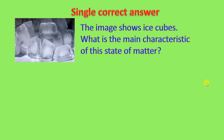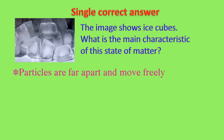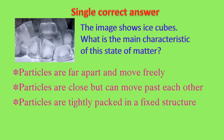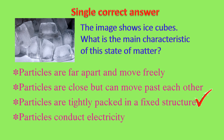Let us see the first question — a single correct answer question. Observe the image given. The image shows ice cubes. What is the main characteristic of this state of matter? These are ice cubes, meaning they are in solid state. We know that in a solid, particles are tightly packed and it has a fixed shape. That's why the correct answer is: particles are tightly packed in a fixed structure.